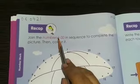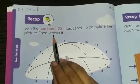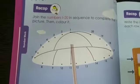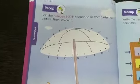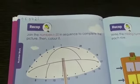Join the numbers 1 to 20 in sequence to complete the picture. Then color it. Here one picture is drawn that is umbrella. You have to complete the picture by joining the numbers.